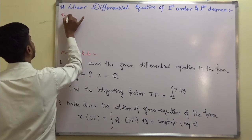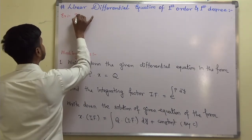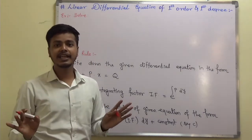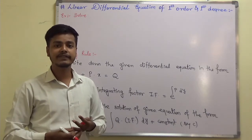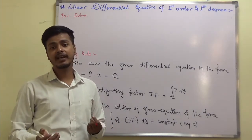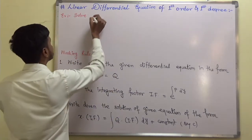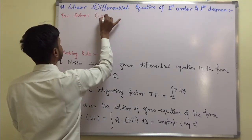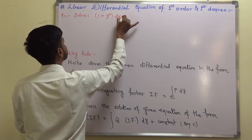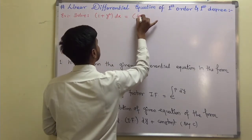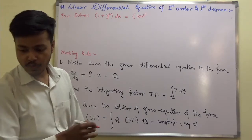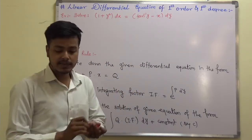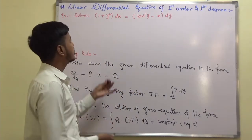Here is the first problem on type 2, which says: solve. In the examination there will not be written anything indicating type 1 or type 2 — you have to identify it and solve accordingly. The problem says solve: (1 + y²) dx = (tan⁻¹y − x) dy.